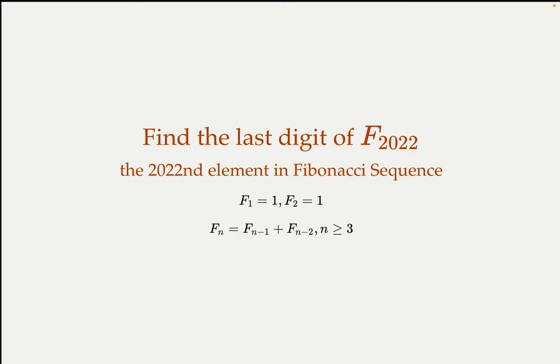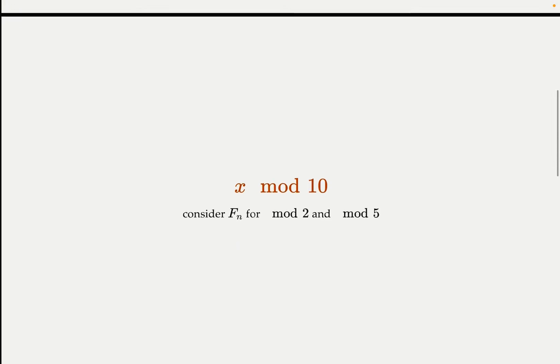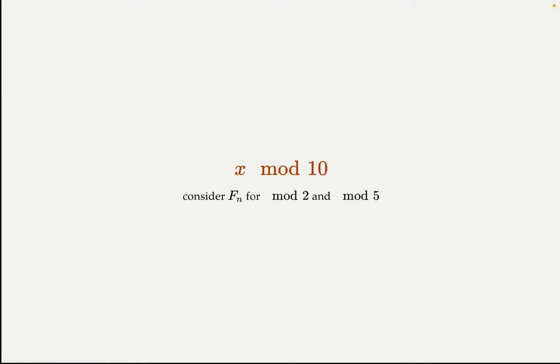The last digit of a number is the number mod 10 — that's a very common approach. In this case, it's not straightforward to figure out what a huge number mod 10 is, so we'd like to find what it is mod 2 and mod 5 to get a clue from there.